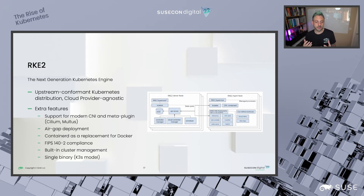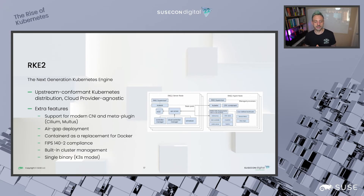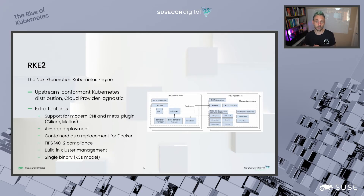RKE2 is an upstream conformant Kubernetes distribution, cloud provider agnostic — you can install it in any cloud or on premises, and overall management can be centralized with Rancher server. It supports modern CNI meta plugins like Multus, air gap deployment, Containerd as a replacement for Docker, and compliance with FIPS 140-2 for approved cryptographic modules. The install process is simple: single binary for server and agent aligned with the K3S model — you just join the agent to the cluster.